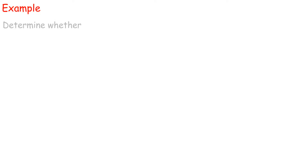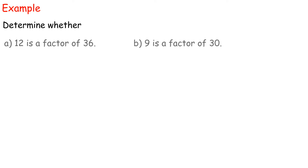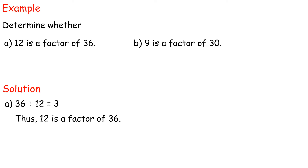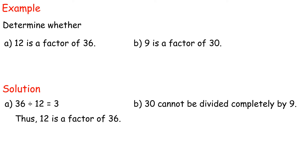Example: Determine whether (a) 12 is a factor of 36, and (b) 9 is a factor of 30. Solution: (a) 36 divided by 12 equals 3. Thus, 12 is a factor of 36. (b) 30 cannot be divided completely by 9. Thus, 9 is not a factor of 30.